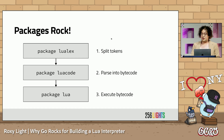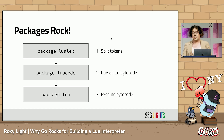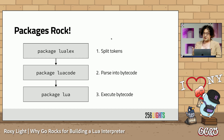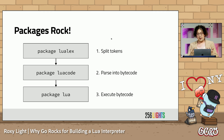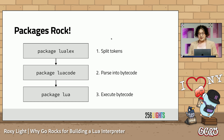If you haven't written an interpreter before, creating one may seem really daunting. Don't worry, I got you. At a high level, it's three steps: lexing, parsing, and executing. There's a lot of elbow grease that doesn't fit in this talk, but you can read my blog post for more of that. I split each of the steps into separate Go packages.